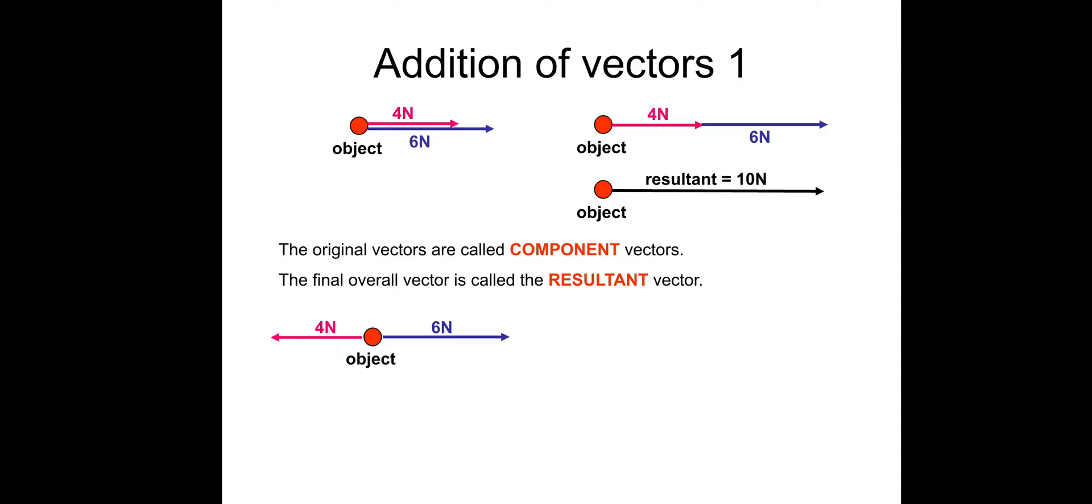So this one, quite intuitive as well. 6 newtons to the right and 4 newtons to the left would give a resultant of 2 newtons to the right. So again, these are the component vectors. The final one is the resultant.